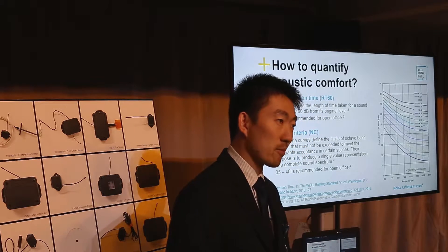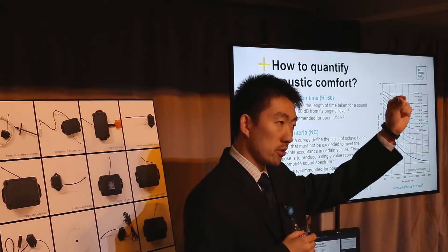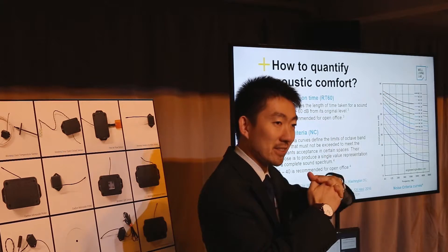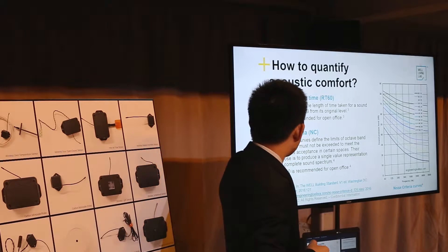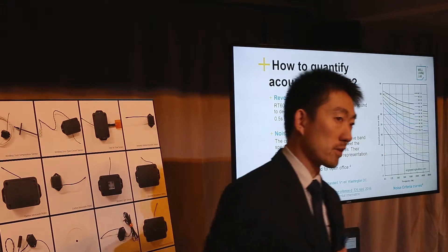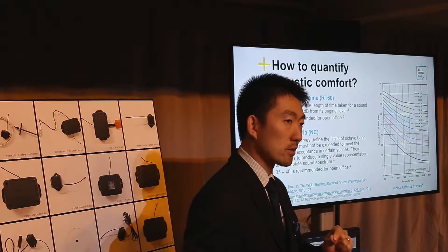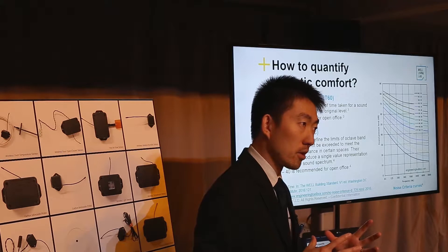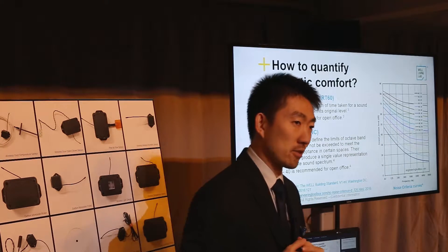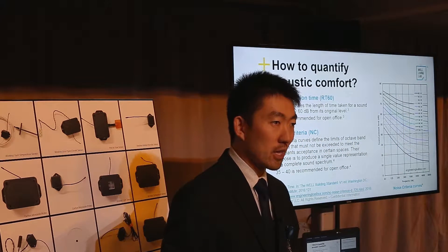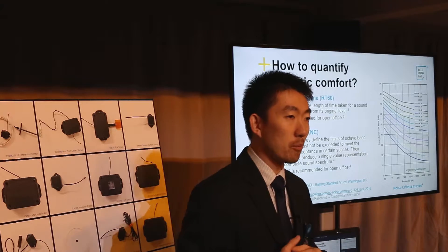First one is reverberation time. Basically, it describes the length of time taking the sound to decay from the original level to decay 60 dB. 0.5 seconds is typically recommended for open office by building standards. Typically, the smaller the number is, the better the acoustic comfort. If it's smaller, it means a lot of sound can be absorbed either by carpet or by ceiling or by walls, so you will have better privacy.